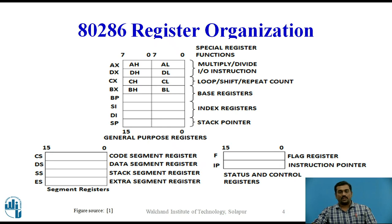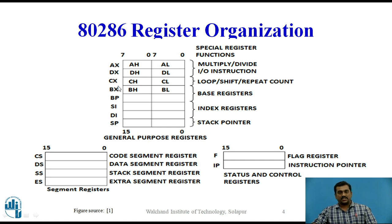As shown in the figure there are 8 general purpose registers namely AX, BX, CX and DX, along with base pointer register, source index register, destination index register and stack pointer register. All these registers are 16-bit. The upper 4 registers are special in that they are byte addressable, meaning you can use AL and AH as separate 8-bit registers. AL is the lower byte and AH is the higher byte of the 16-bit AX register. Similarly for DX, CX and BX registers.